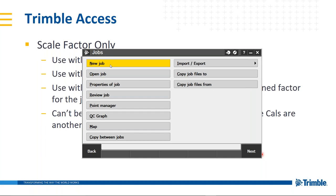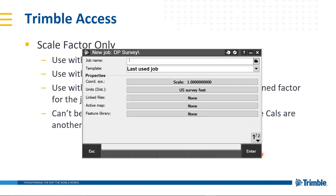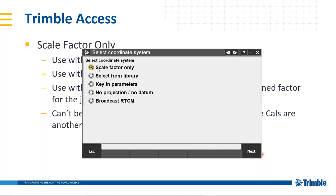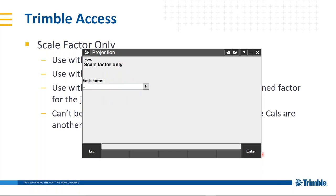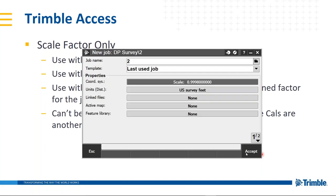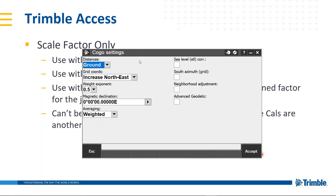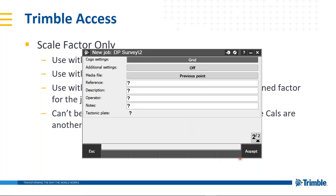Now I'll set up another job and enter an average combined factor. I'll call this Job Number Two. Under coordinate system, scale factor only again, but this time I'll type in a made-up combined factor like 0.9998. In this case I'm actually working with grid coordinates because I'm entering in an average combined factor — that's what we use to go from ground to grid. So I'll flip over to my COGO settings and set them to grid, so that if I do any inverses or calculate points I'm getting grid distances.